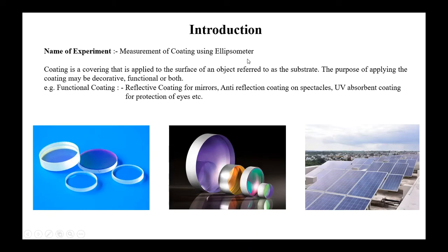What is coating? Coating is a covering that is applied to the surface of an object, generally referred to as substrate. The purpose of applying coating may be decorative, functional, or both. Functional coatings include reflective coating for mirrors, anti-reflection coating on spectacles, and UV absorbing coating for protection of eyes.